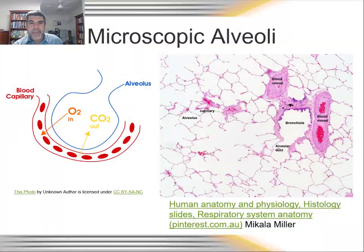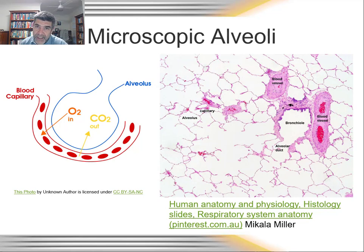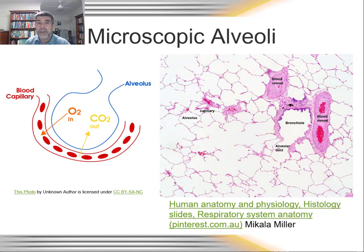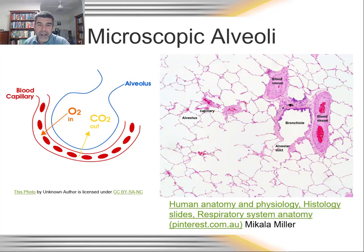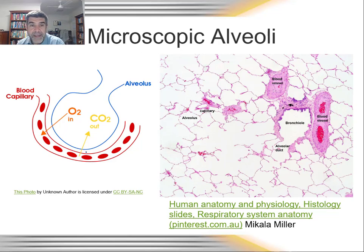The microscopic structures we want to look at are alveoli — one alveolus, multiple alveoli. We need mucus secretions to keep them moist, a thin surface so exchange can occur, and a large surface area. The alveoli look like little bunches of grapes in our lungs that massively increase the surface area for exchange. Just inside each alveolus, on the other side, is a blood capillary.